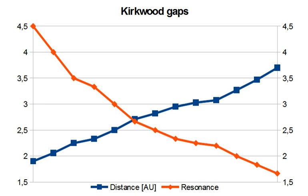The orbital elements of the asteroids vary chaotically as a result and evolve onto planet-crossing orbits within a few million years. The 2-to-1 MMR has a few relatively stable islands within the resonance, however.